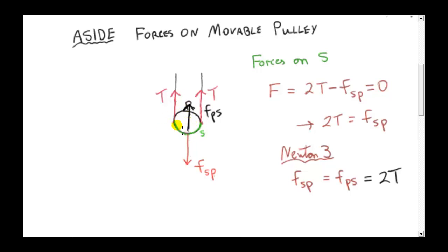This confirms that the force on the pulley due to the string is 2T, which explains what was mentioned earlier. Of course, the weight of the pulley must also be accounted for unless the pulley is so light that its mass can be taken as zero.